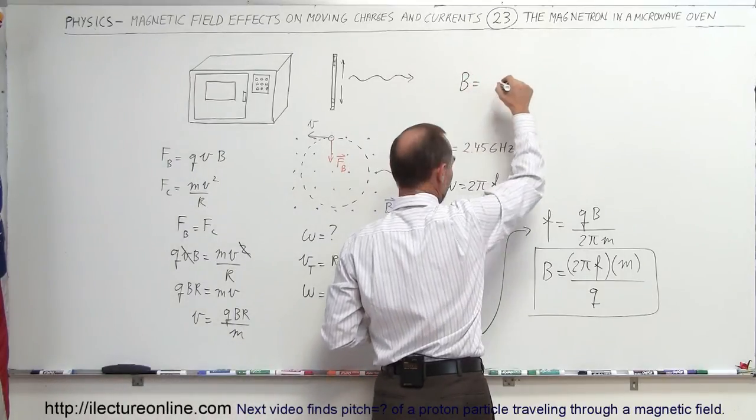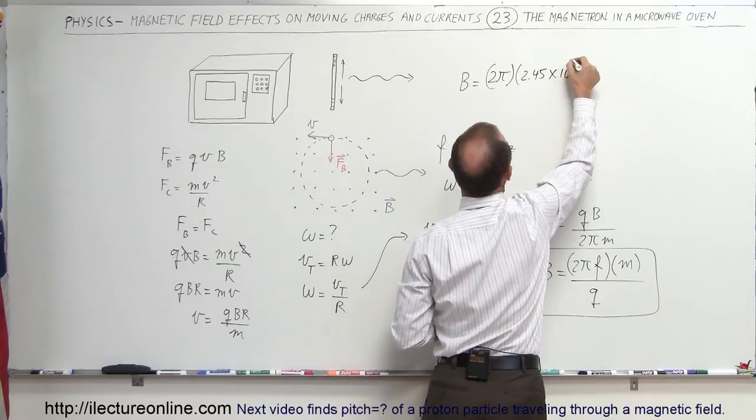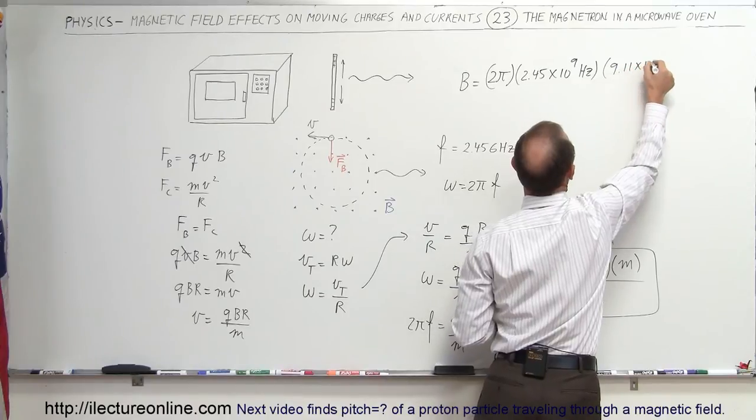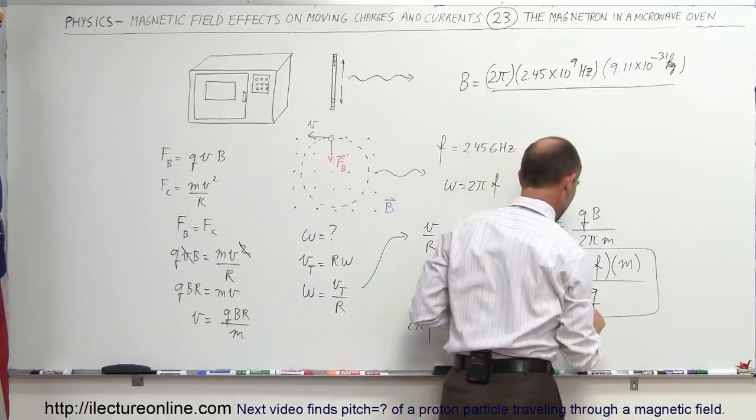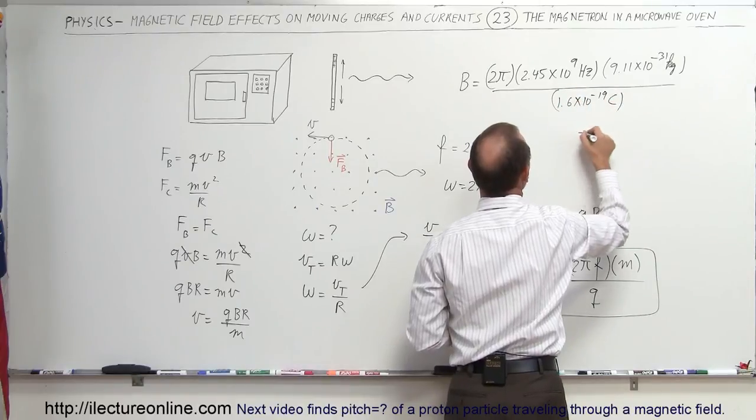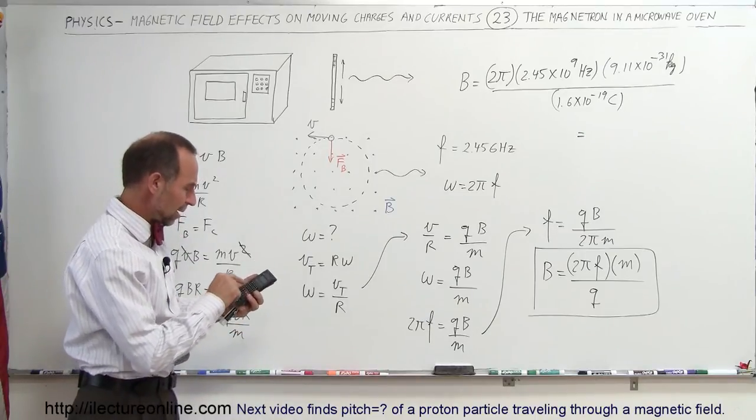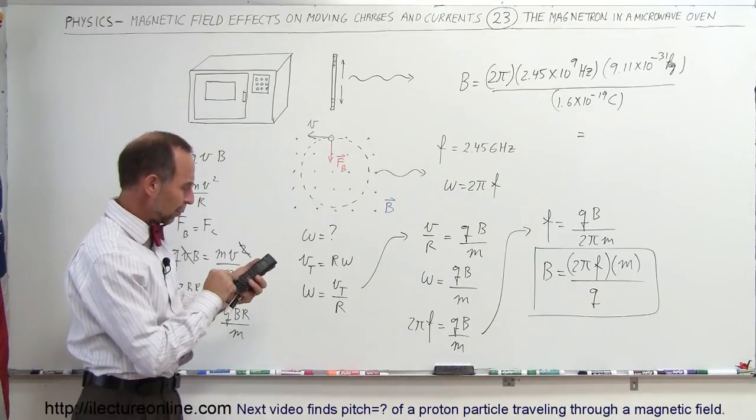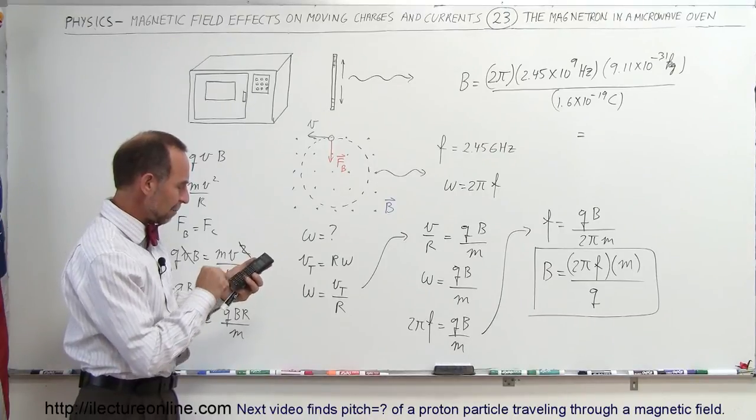So the strength of the B field required is equal to 2 pi times 2.45 times 10 to the 9 Hz, multiply that times the mass of electrons, 9.11 times 10 to the minus 31 kg, and divide the whole thing by Q, which is 1.6 times 10 to the minus 19 Coulombs. And that should give us the strength of the magnetic field required in the magnet in a microwave oven. So 2 times pi times 2.45 E to the 9th times 9.11 E to the 31 minus, and divide by 1.6 E to the 19 minus equals,